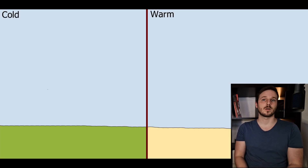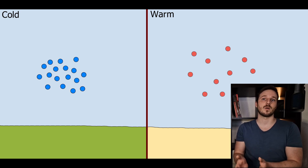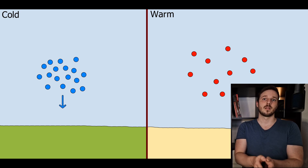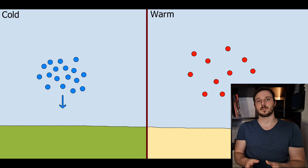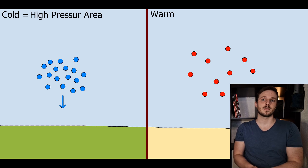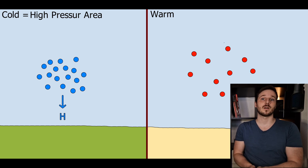The first thing we are going to look at is pressure and density of air. We have cold environments and warm environments. Within cold environments we have cold air, and in warm environments we have warm air. Cold air is denser than warm air and therefore cold air will try to get to the center of gravity, which would be the core of the earth, but it is stopped by the surface of the earth, and at those places a high pressure area is created, shown with an H. The opposite happens in a warm environment.